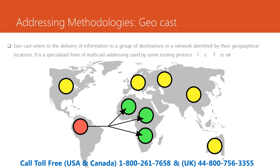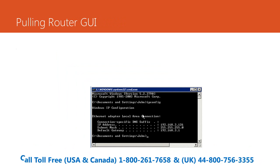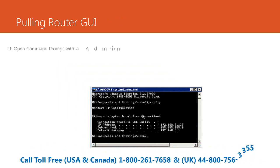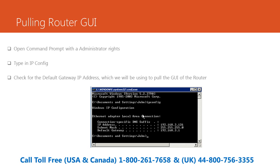To pull the router GUI, open the command prompt with administrator rights, type in 'ipconfig', and check for the default gateway IP address, which we will be using to pull up the GUI of the router.